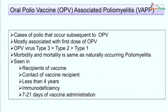VAPP is commonly seen in children less than 4 years old. It is associated with immunodeficient persons receiving oral poliovaccine and is usually seen between 7 and 20 days of vaccine administration.